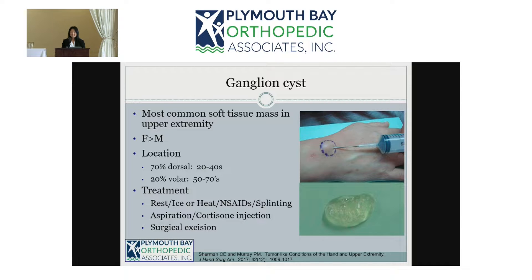There is also surgery to take the cyst out, where you actually trace it back down to its root either at the ligament or the joint capsule. With surgery there is a 30 percent recurrence rate. There is actually a fourth option — they are called bible cysts — where you can take a big book and smash your wrist to rupture it, but that's not really recommended.